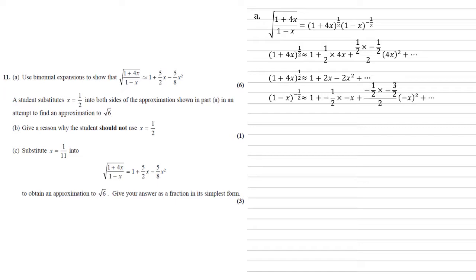The 1 minus x to a minus a half, we use the same formula. So our first term is 1. Our second term is the power of minus a half times by the minus x. And our third term, the power of minus a half times by minus a half take away 1, all over 2 times by the square of minus x, which when simplified gives us 1 plus a half x plus 3 eighths x squared.